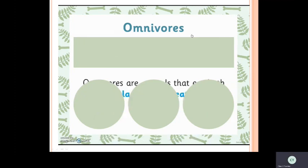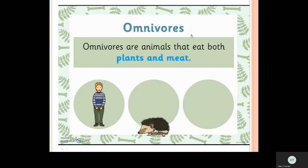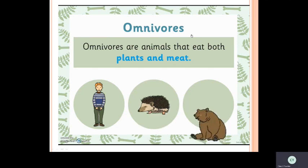Omnivorous animals eat both plants and meat. Good examples are human beings, hedgehogs, and bears.